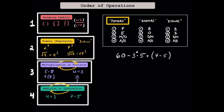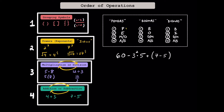While some people use PEMDAS to remember the order of operations, there are also many people out there that use BODMAS or BIDMAS. PEMDAS stands for parentheses, exponent, multiplication or division, and addition or subtraction. BODMAS stands for brackets, orders of power, division or multiplication, and addition or subtraction. And BIDMAS stands for brackets, indices, division or multiplication, and addition or subtraction. Keep in mind that while these are three different acronyms, they all mean the same thing.